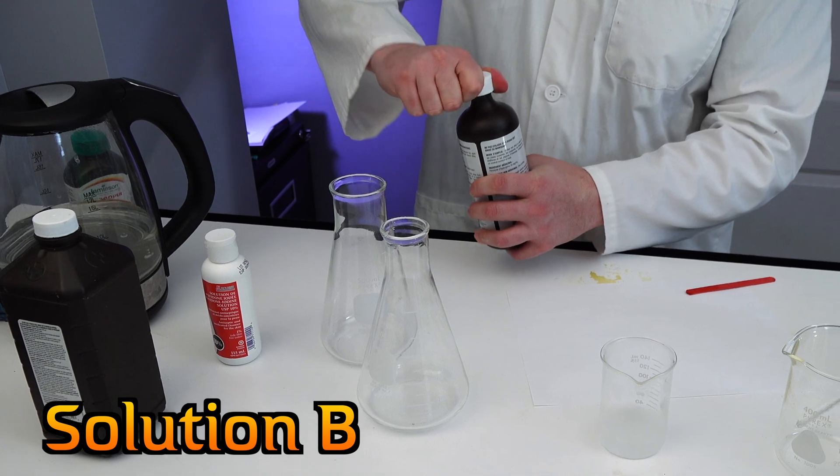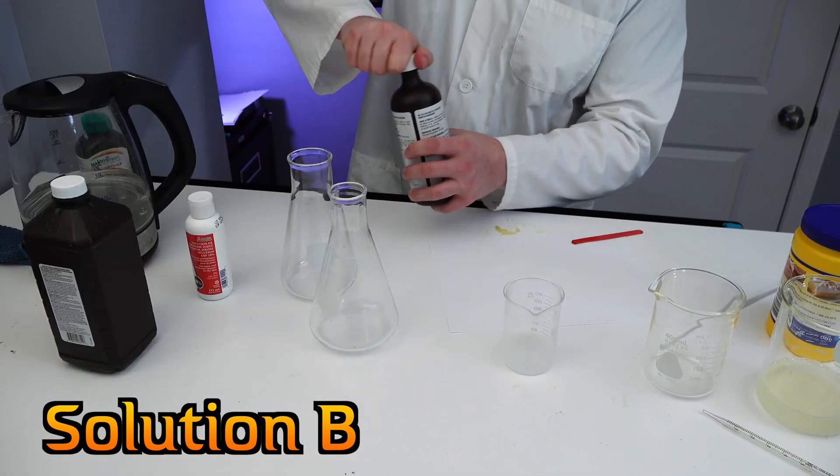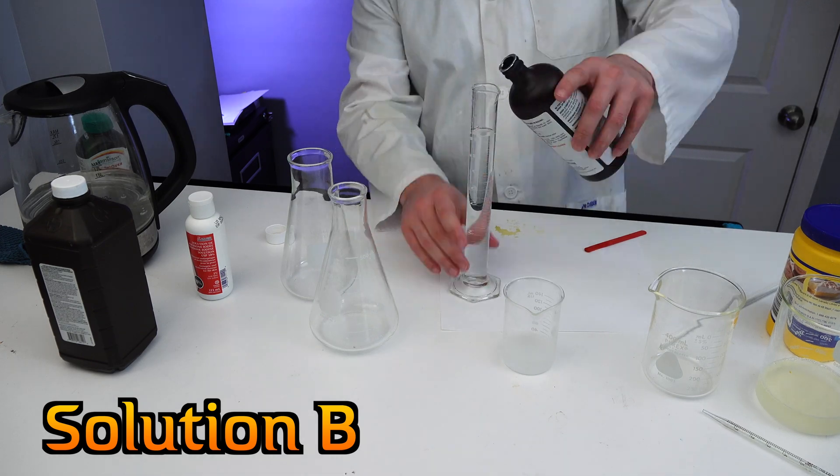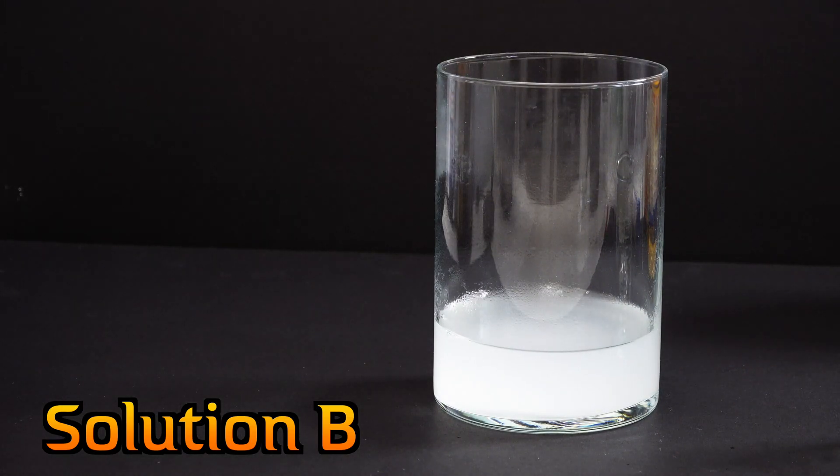So now we need 100 milliliters of hydrogen peroxide. And that is solution B prepared.